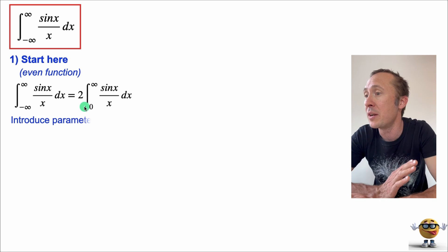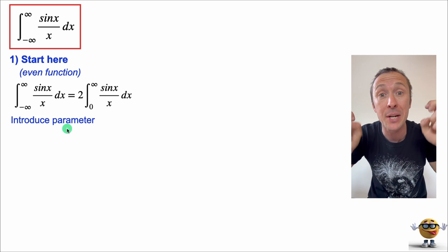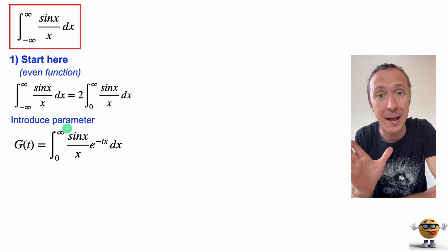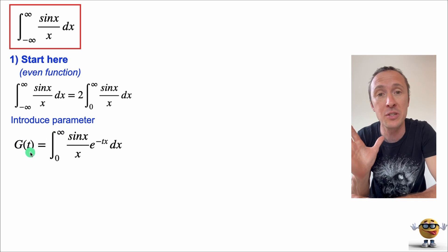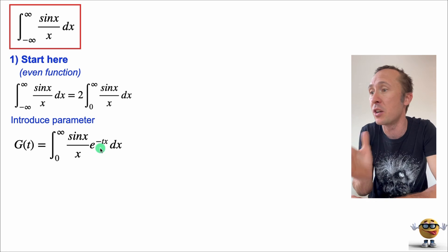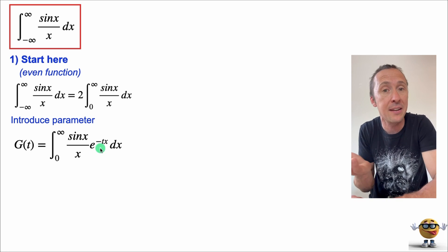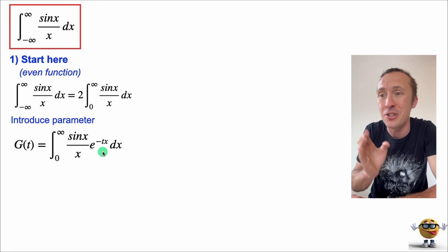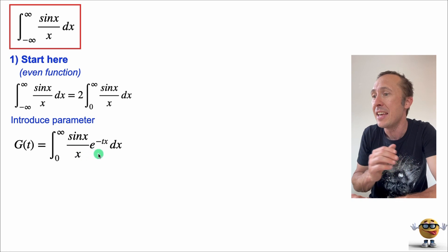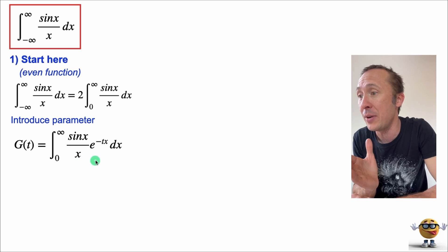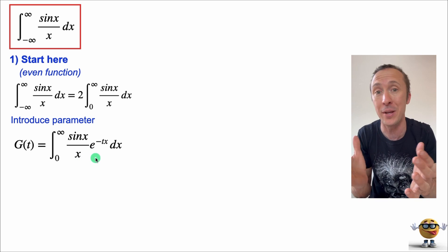Now this is the trick. We're going to introduce this magic parameter, and I'll explain it as we go through, but this seems like magic right now. So we're going to introduce a new function by introducing this parameter, t. We can call the parameter anything, but by convention it's called t. And we're going to introduce this factor, just kind of magically insert it inside the integrand e to the negative tx. And we'll see why we did this, but for now, kind of bear with me.